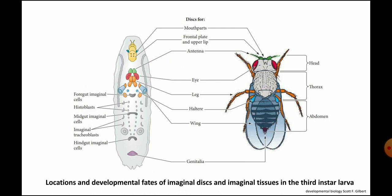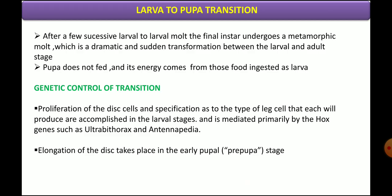In this picture we can see the location and developmental fates of imaginal discs and imaginal tissues in the third instar larval stage. Now let's see the developmental and genetic control in the transition from the larva to pupa stage. After a few successive larva-to-larval molts, the final instar undergoes a metamorphic molt, which is the sudden transformation between larval and adult stage. The proliferation and specification of imaginal cells occurs during the late larval stage and is mediated by Hox genes such as Ultrabithorax and Antennapedia. Elongation of imaginal discs takes place in prepupal stages.